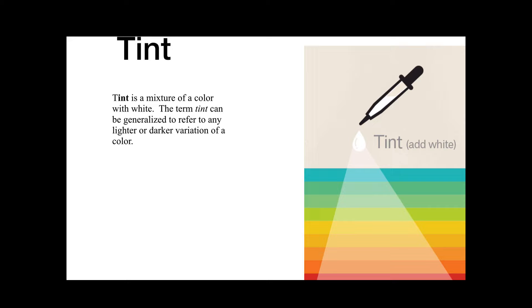So if I tint it a little bit, I have a dark tint. And if I tint it a lot, I have a light tint. So it's whenever you add white to a color to change that effect.